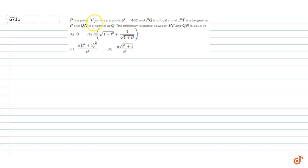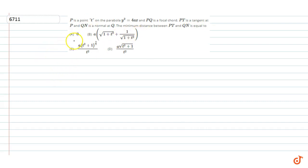In this question, P is a point on the parabola y² = 4x, PQ is a focal chord, PT is a tangent at P, and QN is a normal at Q. We need to find the minimum distance between PT and QN.